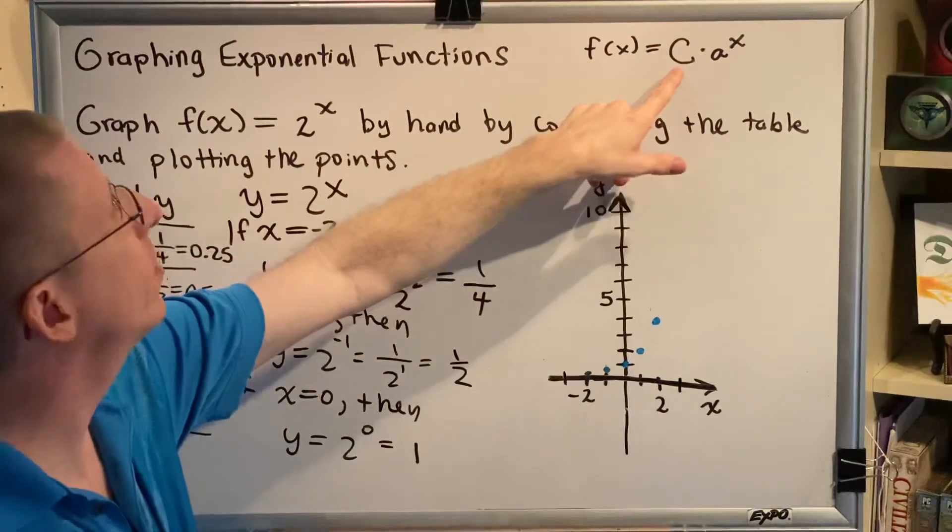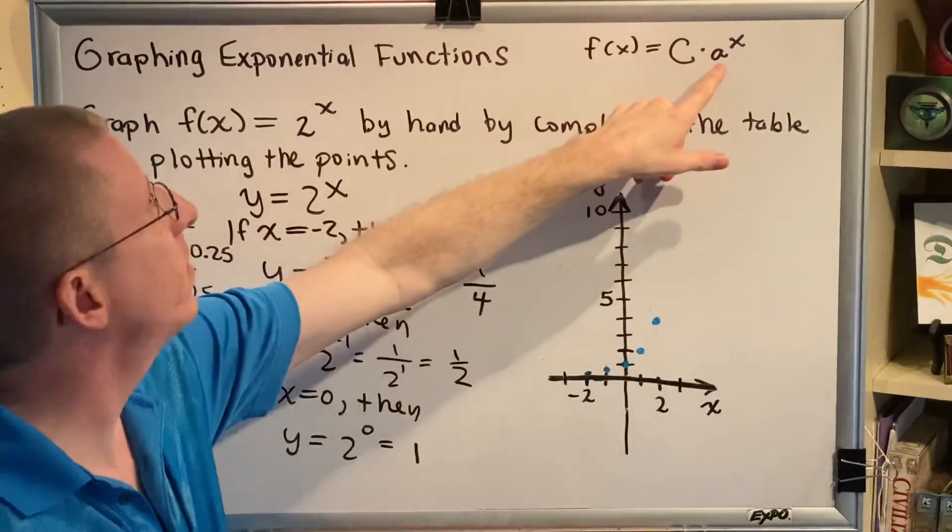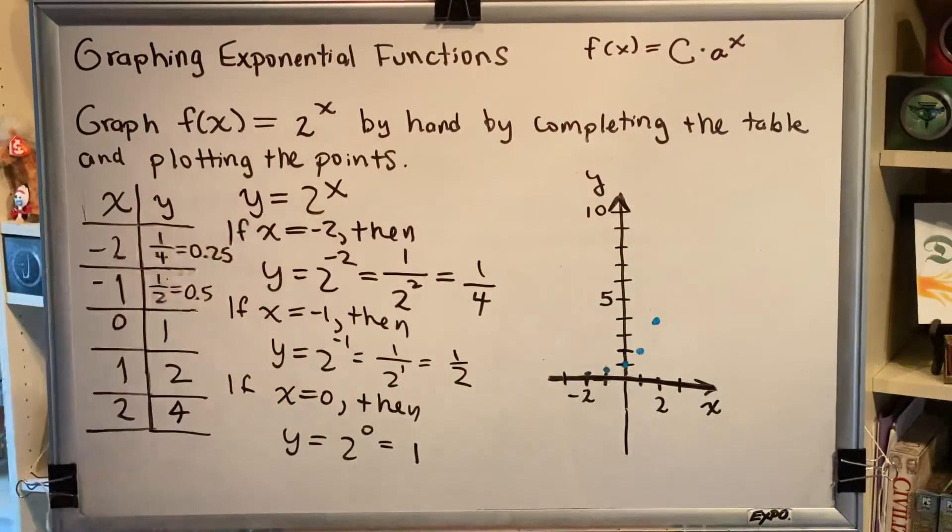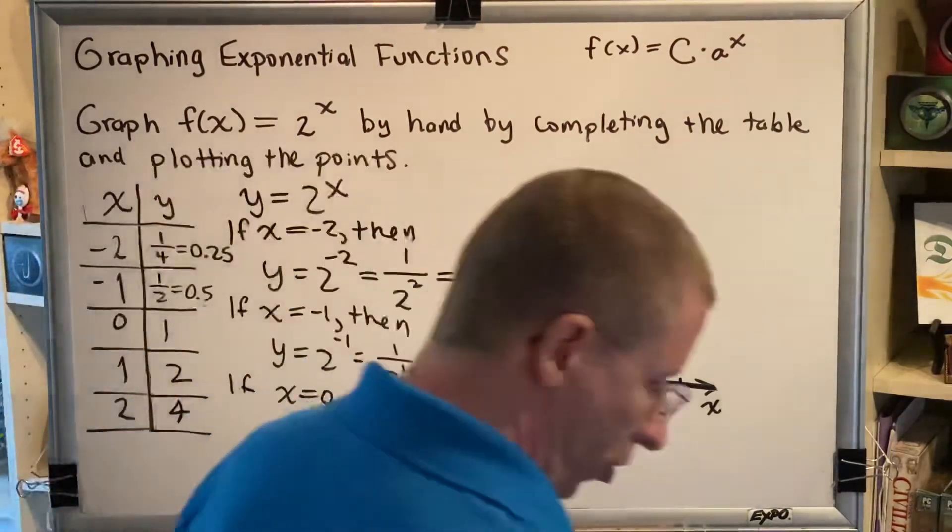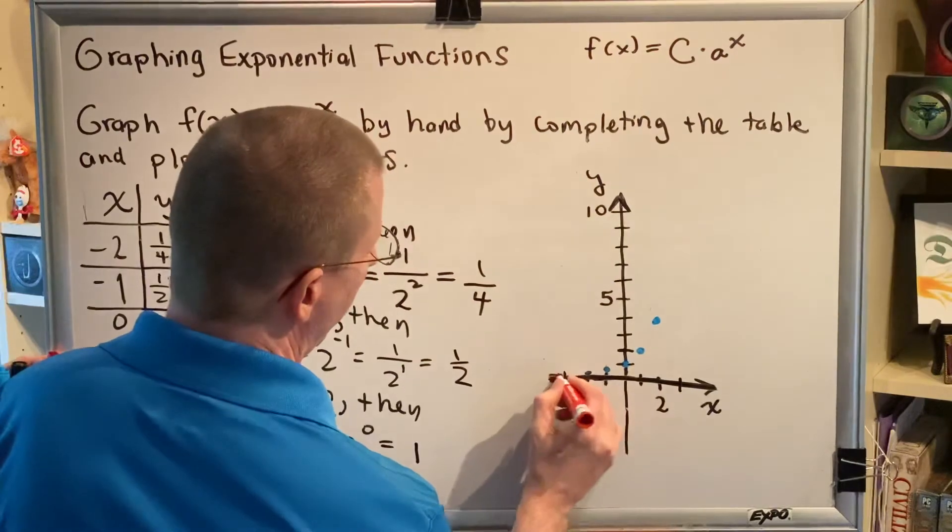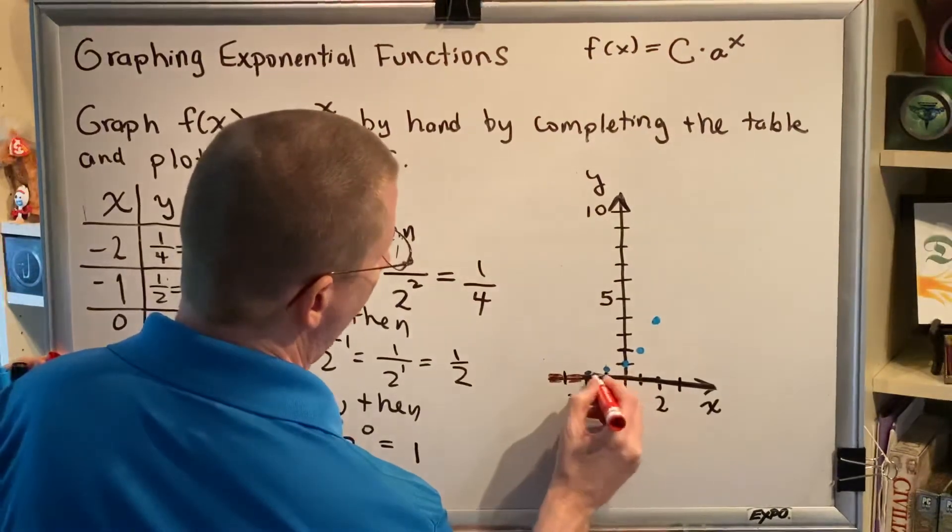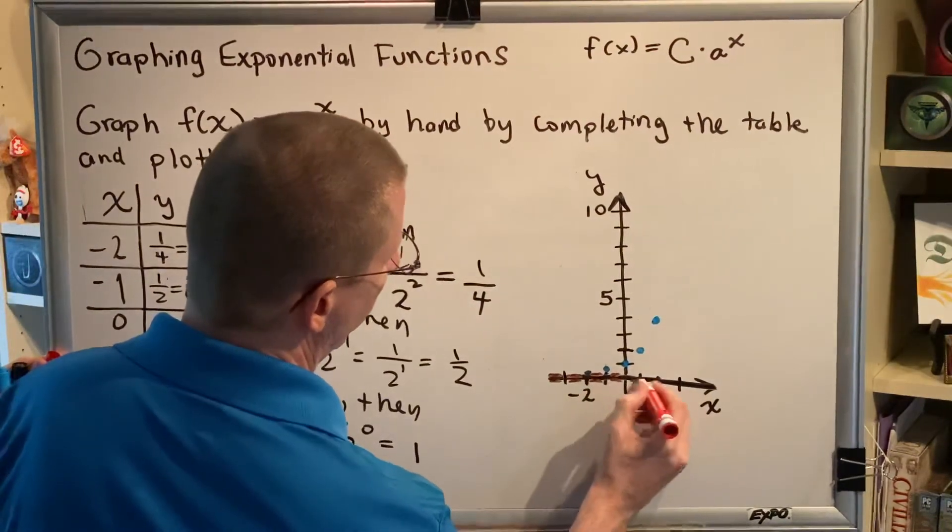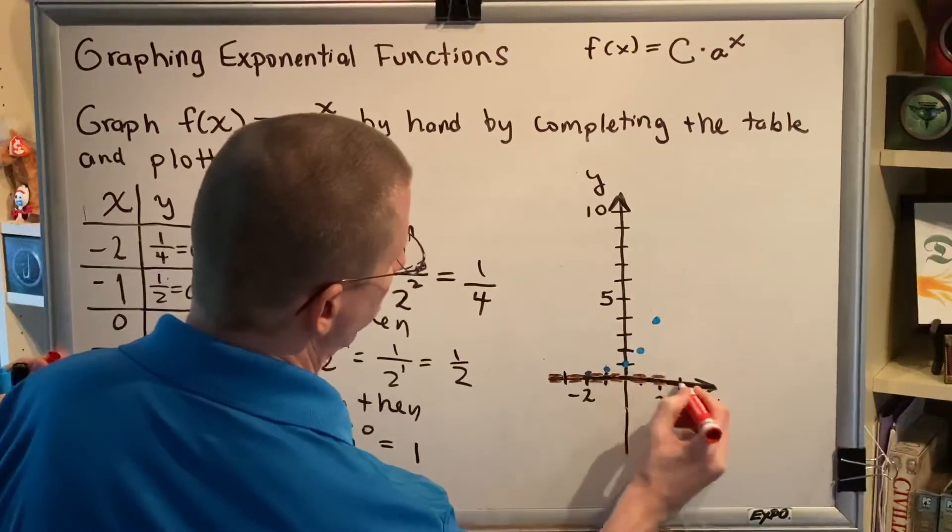If C = 1 and a = 2, then this is the function we have. So we are approaching the x-axis as our horizontal asymptote.